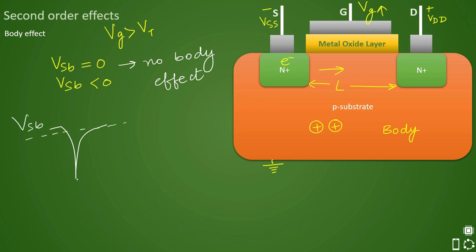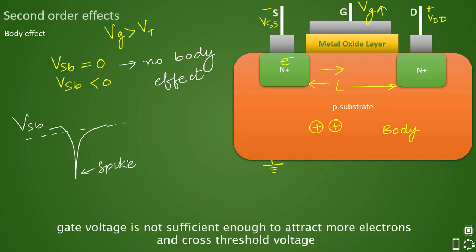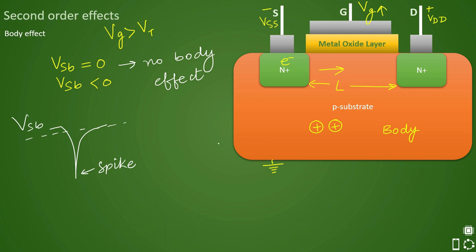So at that time, this moment when this spike comes, at that time you may see that your threshold voltage is not sufficient enough to turn the transistor on. And we don't want that, so at that time your VT will increase and we do not want this, that is why we essentially bias ourselves directly to VSB as zero so that we do not see any such kind of noise.